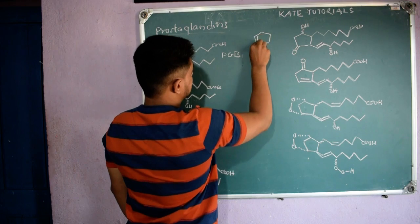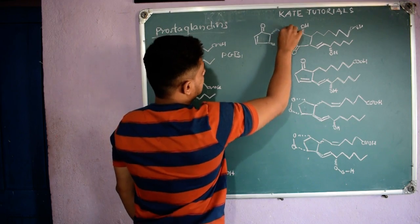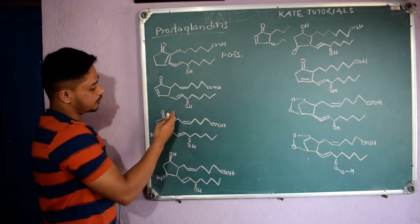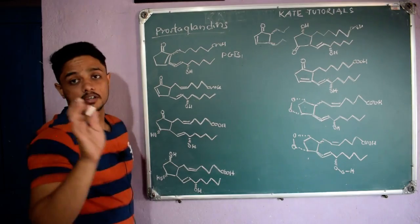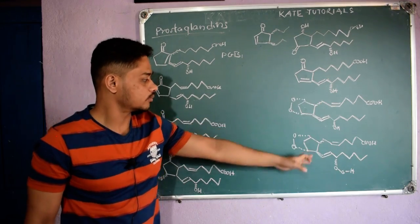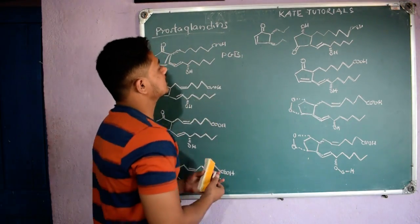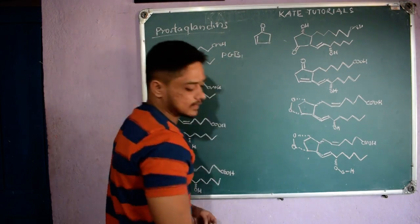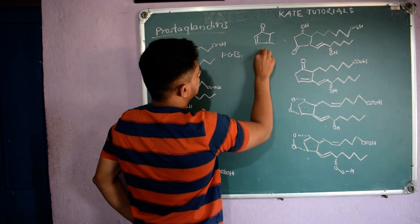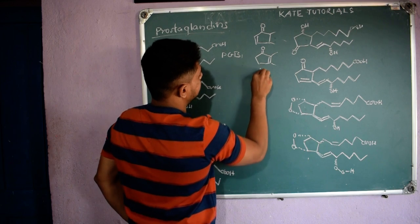Let me revise what we learned in the last class. For the side chain, it is always below the plane here and above the plane there, and the chain continues like this. You should remember: it is always below, it is always above. This structure is type A, and this one is type B.